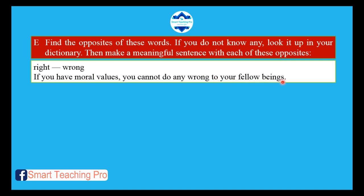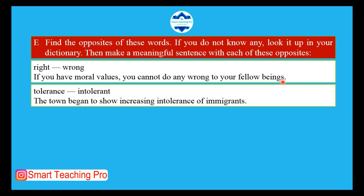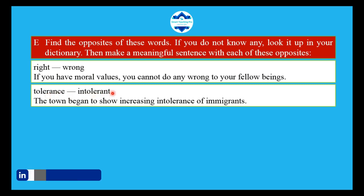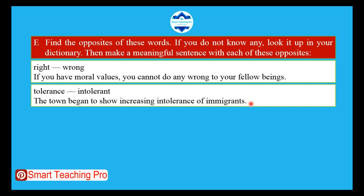Example: 'Right' — correct — its opposite is 'Wrong.' If you have moral values, you cannot do any wrong to your fellow beings. যদি তোমার নৈতিক মূল্য থাকে তবে তুমি তোমার সঙ্গীদের সাথে কোনো অন্যায় করতে পারবে না। Next word: 'Tolerance' — its opposite is 'Intolerance.' The town began showing increasing intolerance of immigrants.